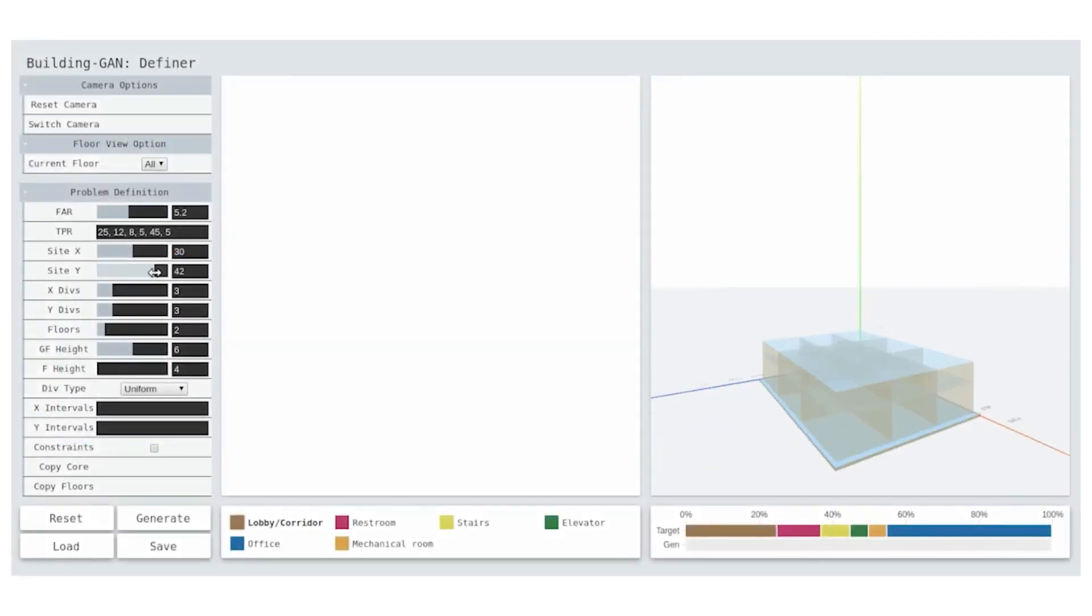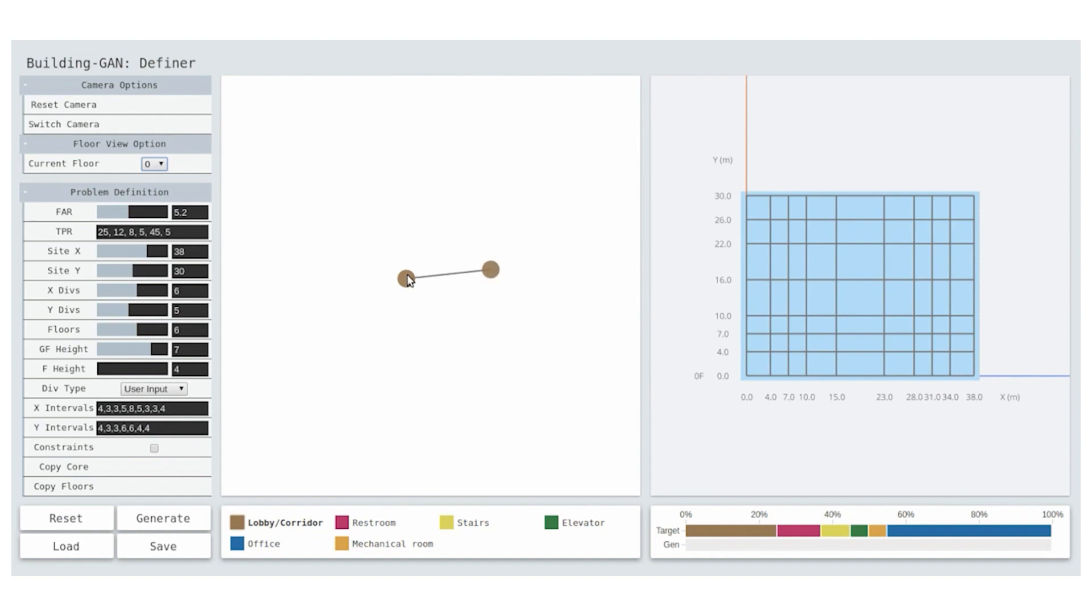Here is a simple demo to show how Building GAN works. The architect can first fill in the site information, define the space partitions, create a bubble diagram by drawing the edges to illustrate their idea, and finally generate the volumetric designs.